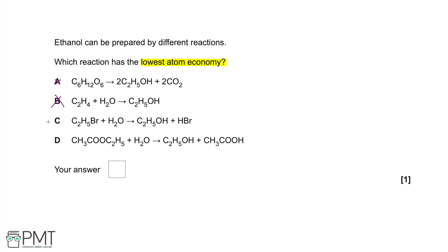So we're left with C and D, with an option between hydrogen bromide and ethanoic acid as side products. A really good thing to look out for in atom economy questions is a side product that contains a halogen, because halogens tend to have quite high atomic mass — bromine is 79.9, and iodine is even heavier. If one of those atoms ends up not in your desired product, it can really lower the atom economy. So the answer is C.